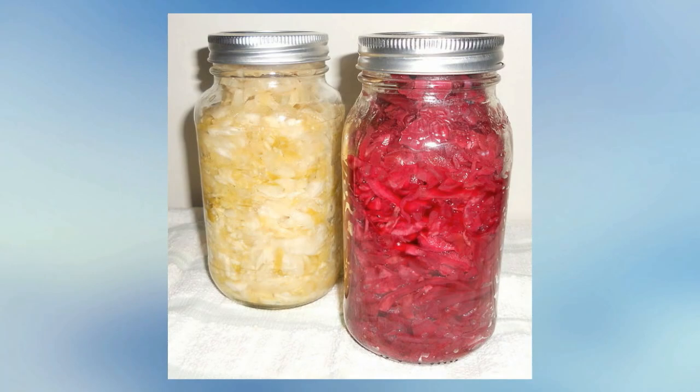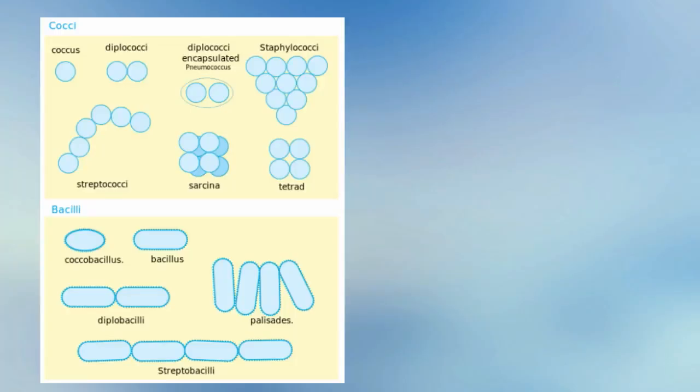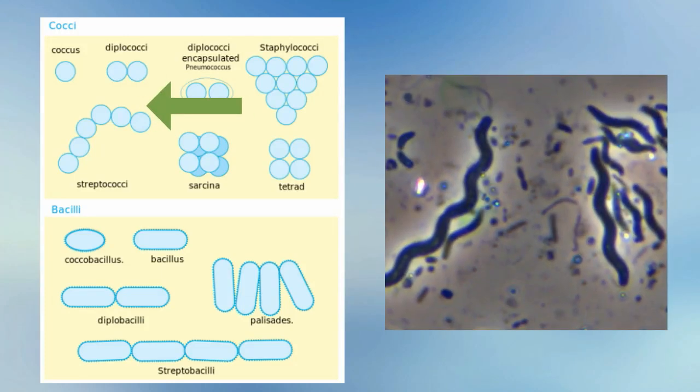Bacteria can be classified by their shape. For instance, Coccus has a sphere shape, Spirillum has a spiral shape, and Bacillus has a rod shape.